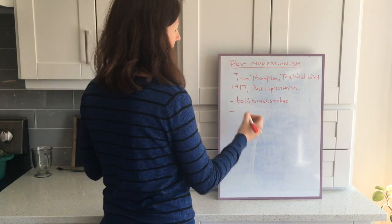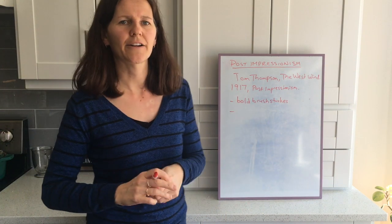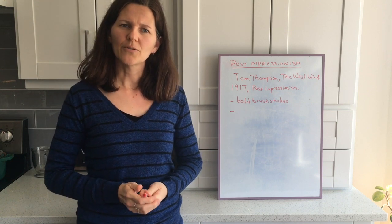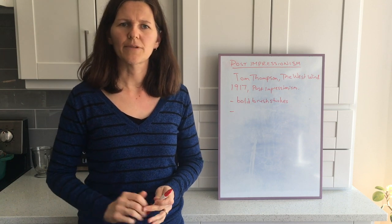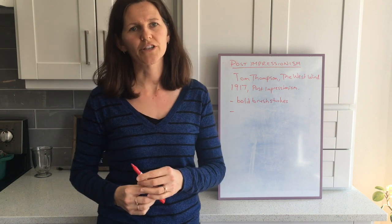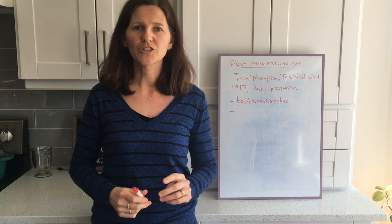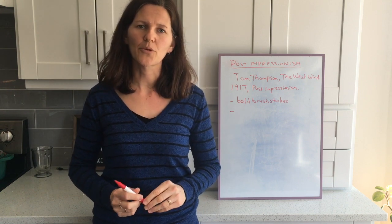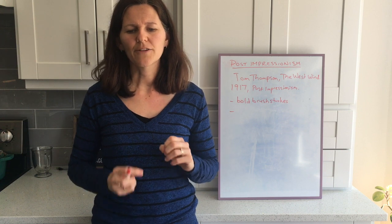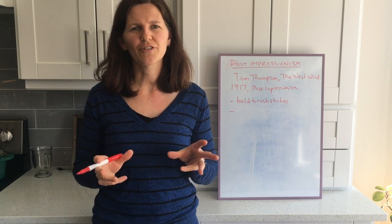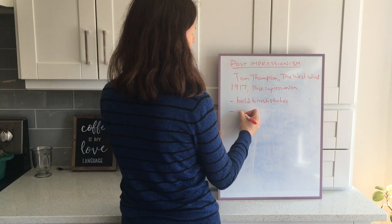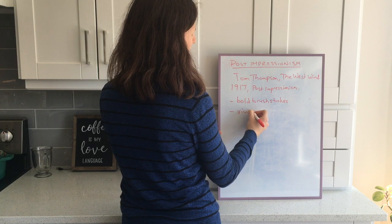The second characteristic - and you'll see that there - the color is quite vivid. You don't always see that with Tom Thompson's, but definitely the other Post-Impressionists, especially Vincent Van Gogh, you're going to see that they're taking color and making it more vivid than you would think. So we're going to write down vivid color.